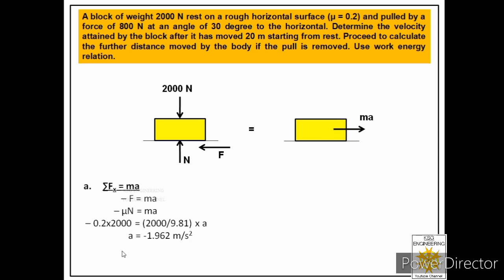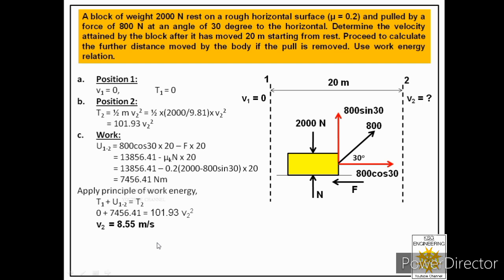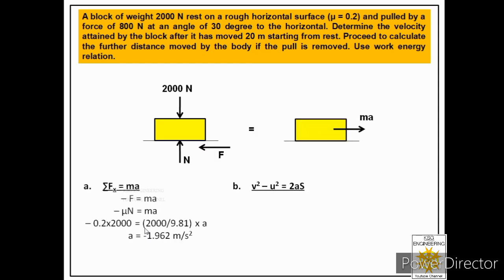Now we know the retardation and must find the distance travelled. The final velocity is 0 and the initial velocity is 8.55 meters per second (the velocity at stage 2). Using the kinematic equation v squared minus u squared equals 2as: 0 minus 8.55 squared equals 2 times (minus 1.962) times s. From this, we get the distance s equals 18.62 meters. I hope this answer is clear to you, thank you very much.